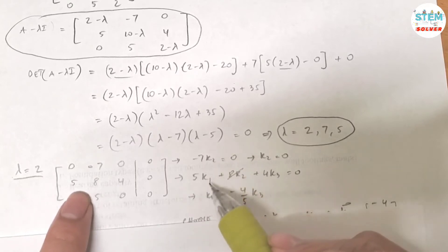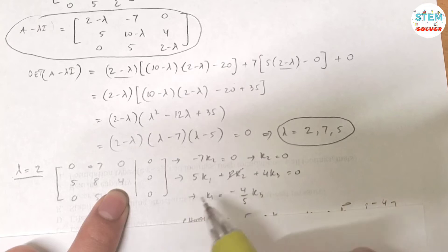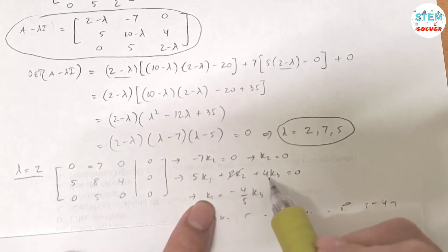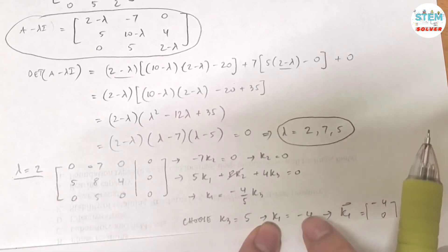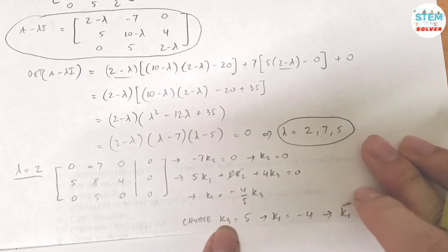Now let's use the second equation. 5k1 plus 8k2 plus 4k3 equals 0. So you know k2 equals 0, just ignore it. Now solve for k1, you got negative 4 over 5k3.